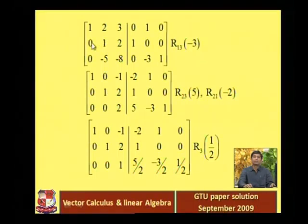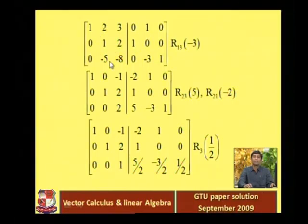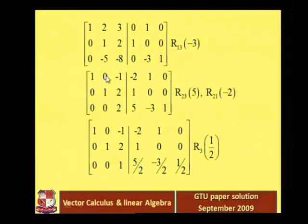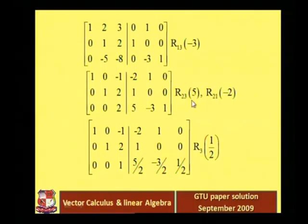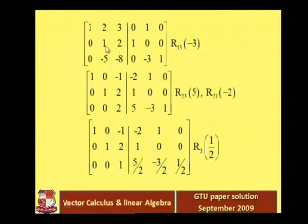In the next process we multiply the second row with minus 2 and add into the first row so that position becomes zero. And we multiply the second row with 5 and add into the third row so that position also becomes zero. The second row remains as it is: 0 1 2 1 0 0.